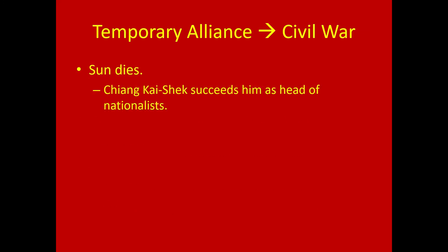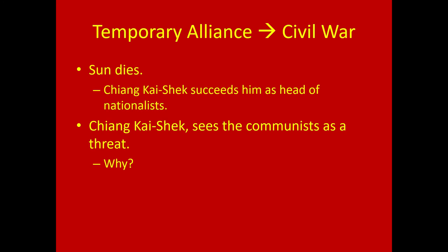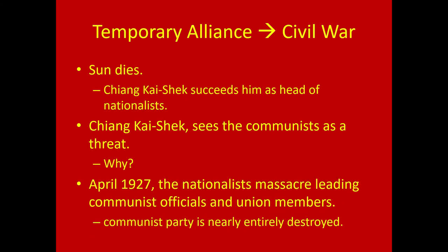Sun Yat-sen dies and his successor, Chiang Kai-shek, becomes the head of the nationalists. Chiang Kai-shek sees the communists as a major threat because they're becoming really popular with the peasants, and there are far more peasants in China than businessmen or city dwellers. In April 1927, the nationalists massacre leading communist officials and union members; the Communist Party is almost entirely destroyed in terms of actual infrastructure.